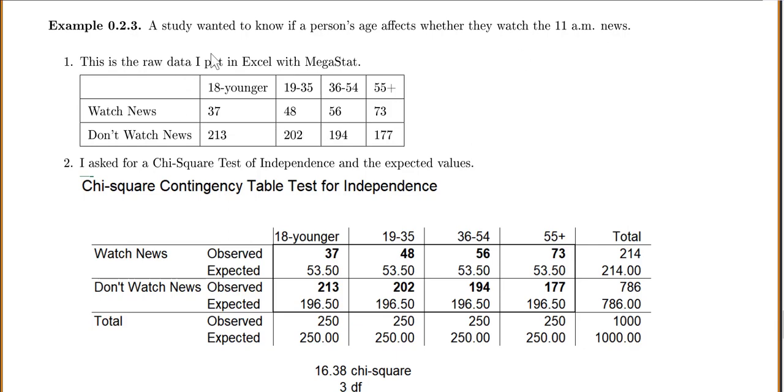In this example, we're going to do another chi-square test of independence, but we're going to use our computer output to interpret it. A study wanted to know if a person's age affects whether they watch the 11 a.m. news.